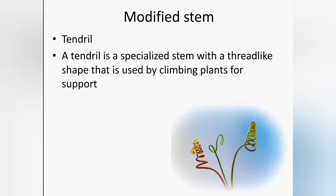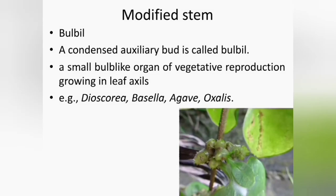A tendril is a specialized stem with a thread-like shape used by climbing plants for support. In some cases, leaves and petioles are also modified into tendrils. The example of stems modified into tendrils is Passiflora and grapes. A bulbil is a condensed axillary bud, a small bulb-like organ of vegetative reproduction growing in the axillary region of a leaf. For example, Dioscorea, Agave and Oxalis.